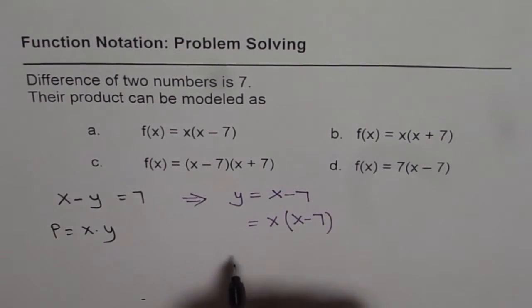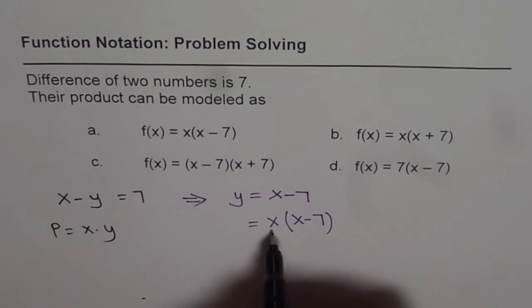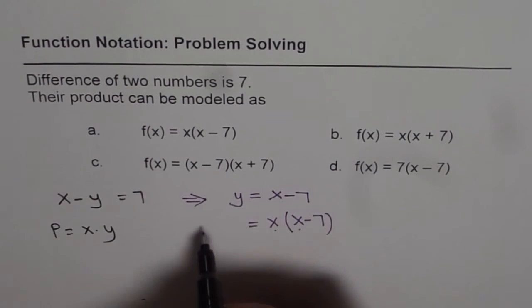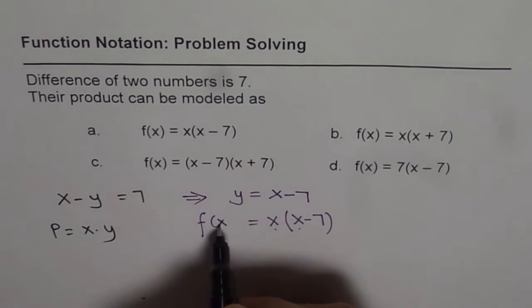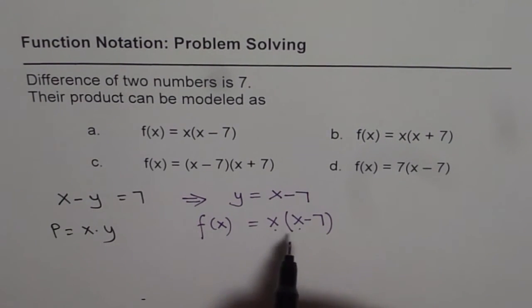And in function notation, this product could be written as a function of x. Now on the right side of equality, we have only one variable. And therefore, we can write this as function of x. And this is the product. Multiplying these two terms, we get the product. So that becomes our equation in function notation.